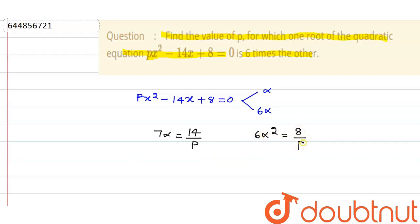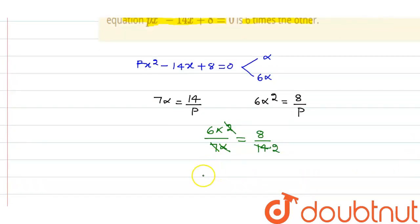Now what I do is divide this: 6 alpha square upon 7 alpha is equal to 8 upon 14. One alpha will be cancelled out, and this simplifies to alpha equals 4 by 6.